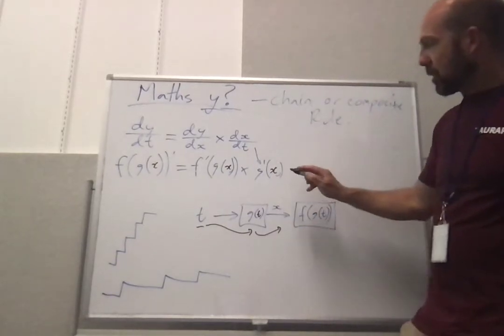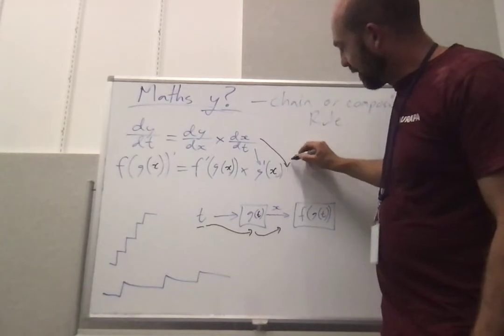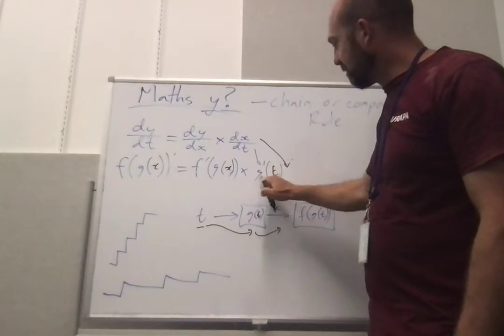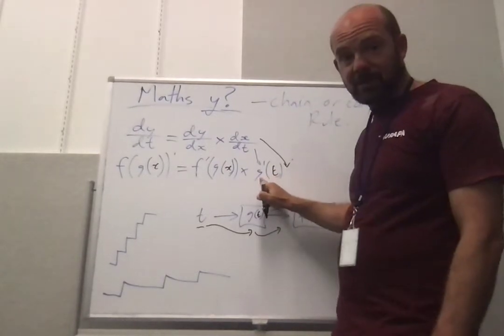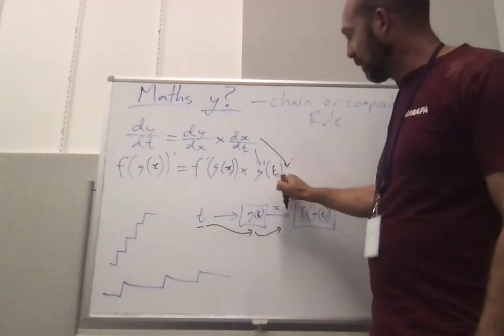So straight away this relationship's obvious, right? So if I put my time into this, the derivative of this function we're going to see how quickly I'm moving across. So this is clearly my speed.